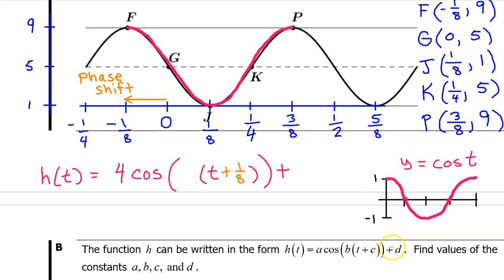In unit one, we learned that the d value causes a vertical translation. Notice that the parent function has a midline at zero. However, the midline of h of t is at five. That is a vertical translation by five. That means the value of d is five. Now let's go back and find that b value. I want you to memorize the b value formula. b is given by two pi divided by the period.